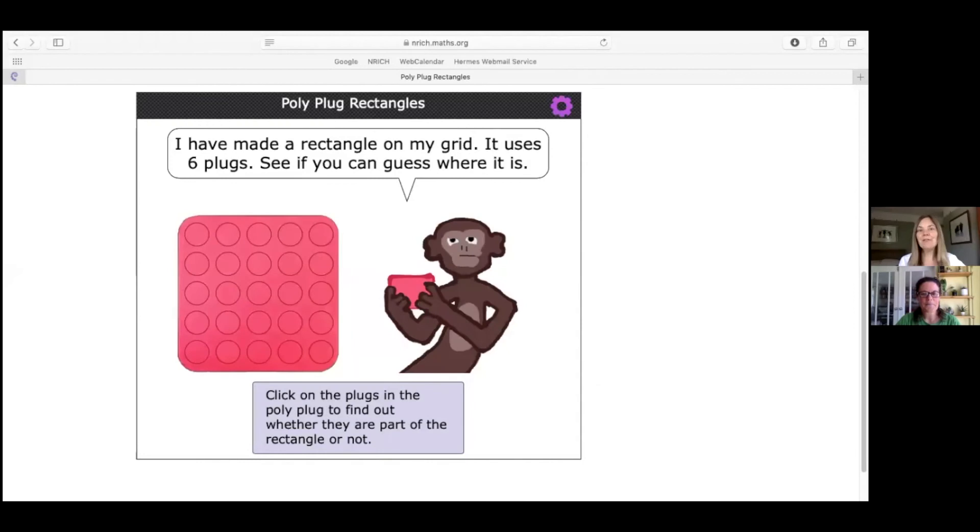Okay, let's have another go at this polyplug rectangle challenge. This time, though, let's see if we can find out where the rectangle is without having all six ticks. So, Fran, are you ready? I am. We started with one in the middle last time, Liz. Could we do that again? Yes. Why not? Good idea. Oh, okay. Okay. Not in the middle.